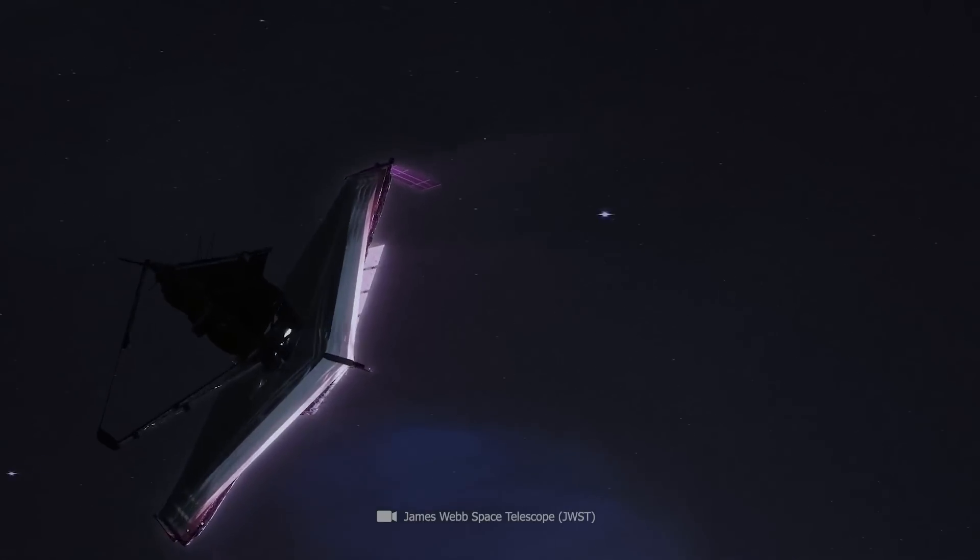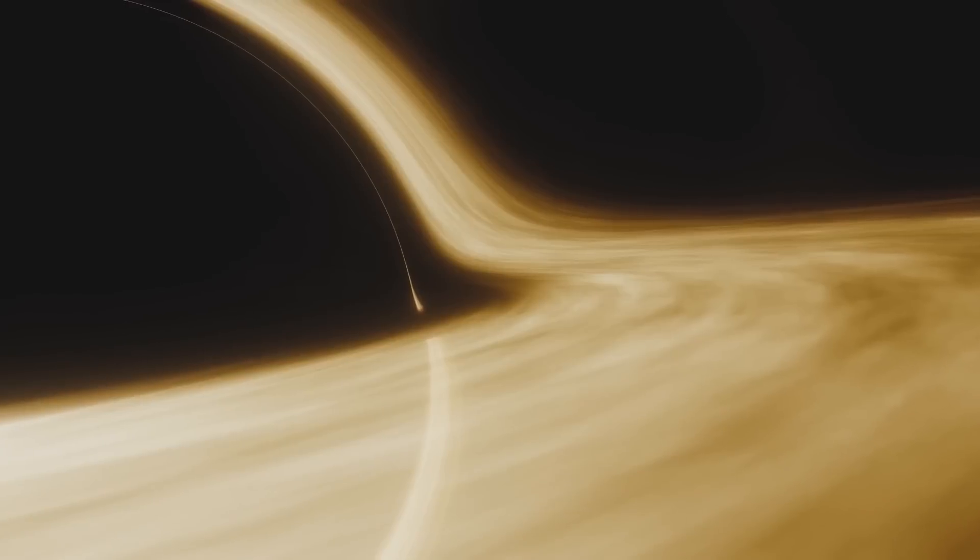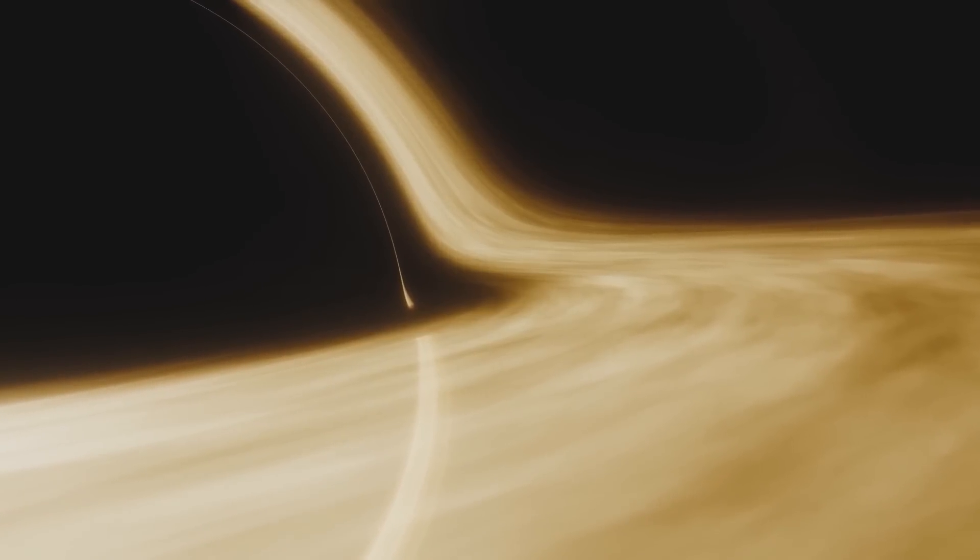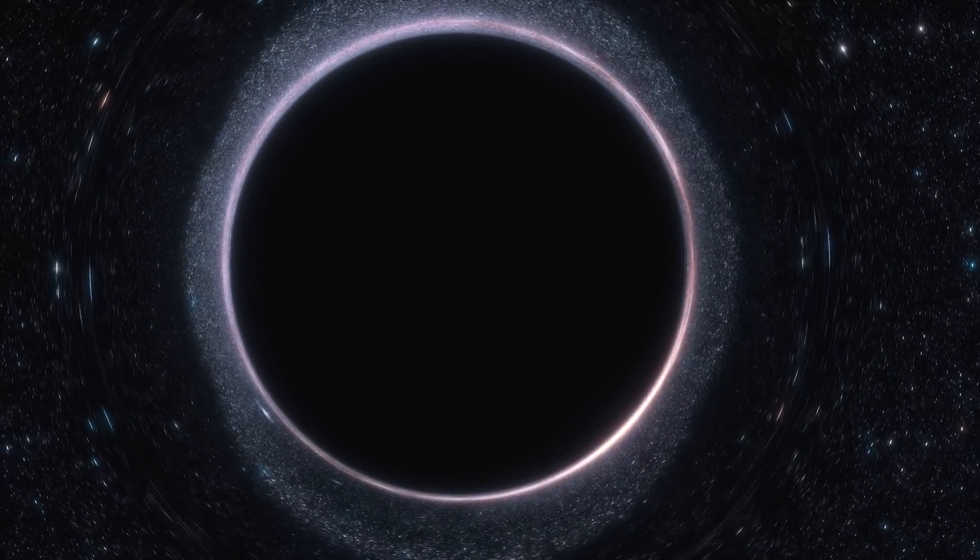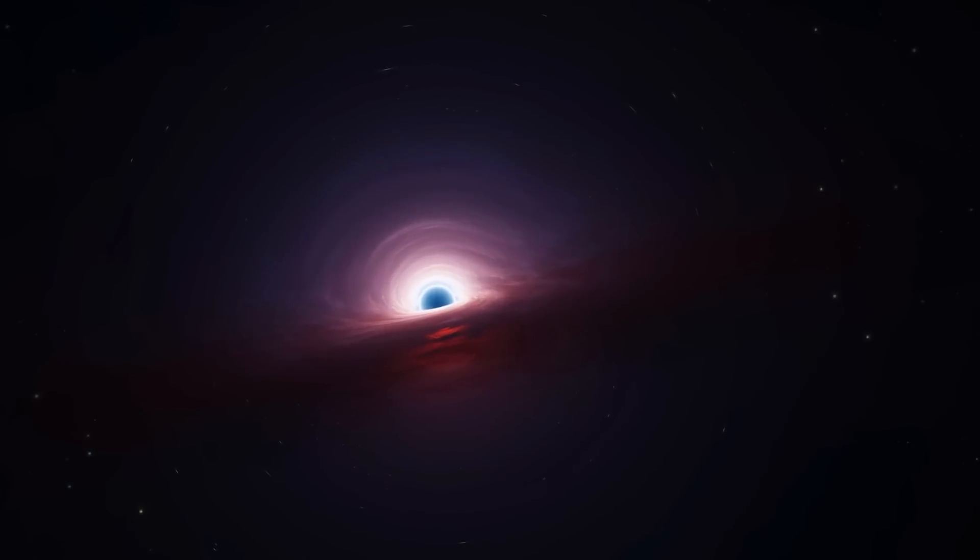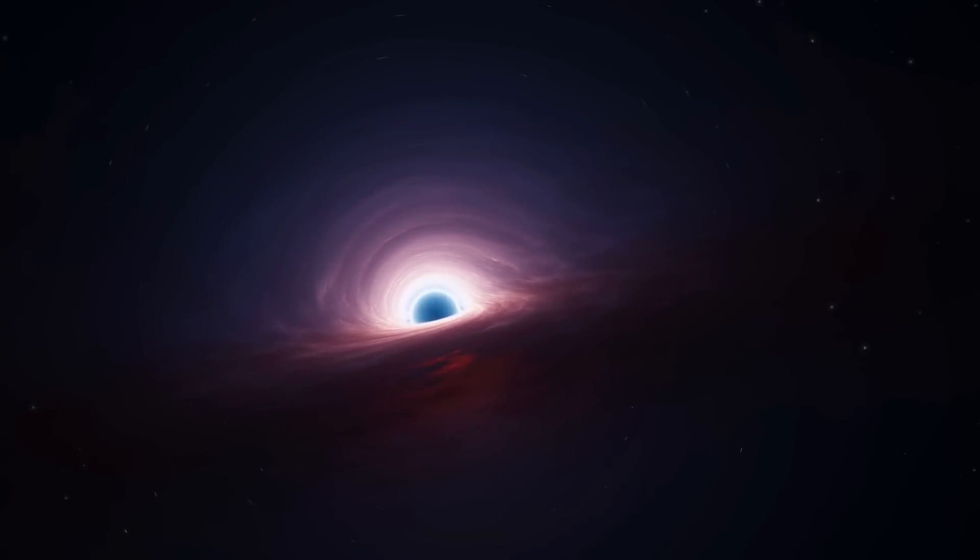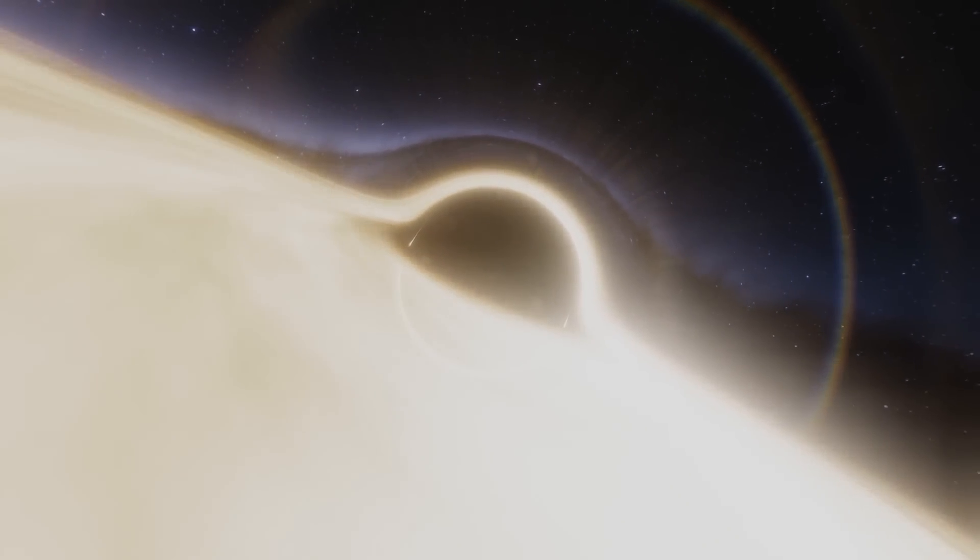James Webb discovered a black hole on the cusp of the cosmic dawn so huge that all scientific theories cannot explain how it was created. This ultra-massive black hole has been setting new astronomical records ever since it was first discovered. It is well over 13 billion years old, so it certainly dates back to the early days of the universe and is so massive that it contains the mass of billions of suns.